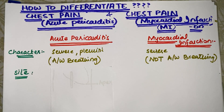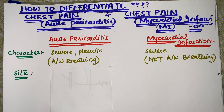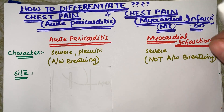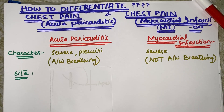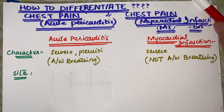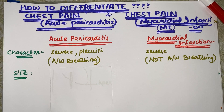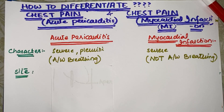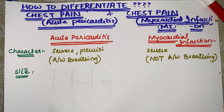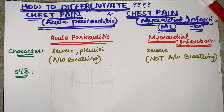Assalamu alaikum, this is Rama Tazara and today my topic of discussion is acute pericarditis. The main clinical presentation of a patient with acute pericarditis is chest pain. This video will focus on how to differentiate the chest pain of a patient with acute pericarditis from the chest pain of a patient with myocardial infarction. This is a very important clinical point to memorize and to have a firm grip on.